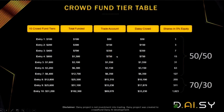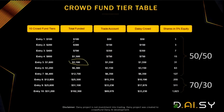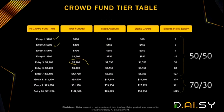Before we talk about the matrix itself, let's discuss the terminology. We will be talking about tiers and generations. Whenever we talk about tiers, we are referring to the crowdfund packages and there will be 10 of them. One of the most frequently asked questions is: can I buy entry level five right away? The answer is no — you will have to buy all packages one by one, starting with the $100 package.